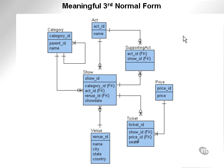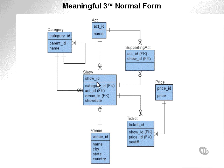Meaningful third-normal form. What do I mean by meaningful third-normal form? Take this example: a table structure which represents pop concerts or pop acts doing many shows at many venues all over the country. They have supporting acts — quite often, not always, but quite often a supporting act is also an act. Therefore, the relationship between the act entity and the show entity is actually one-to-many or many-to-many. The many-to-many relationship between the act and the show entities can be resolved into a single entity called 'supporting act.' It is meaningful — it has a name which makes sense.